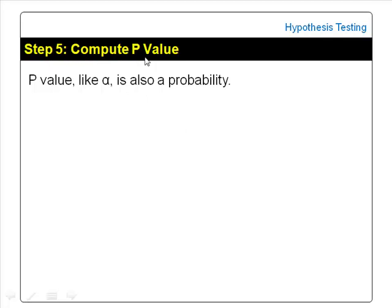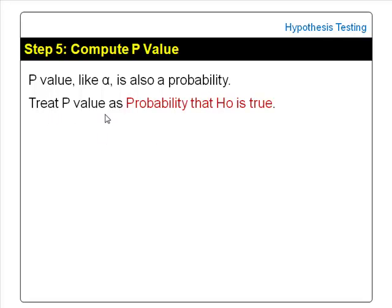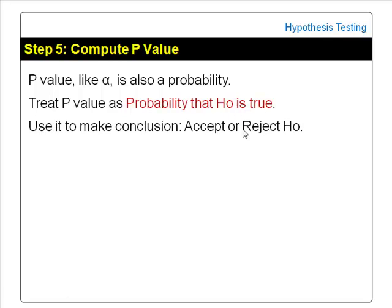In step 5, we compute the p-value. The p-value, like the level of significance alpha, is also a probability. An easy way to remember p-value is to treat it as the probability that the null hypothesis is true. We then use the p-value to make a conclusion on our hypothesis test — to accept or reject the null hypothesis.